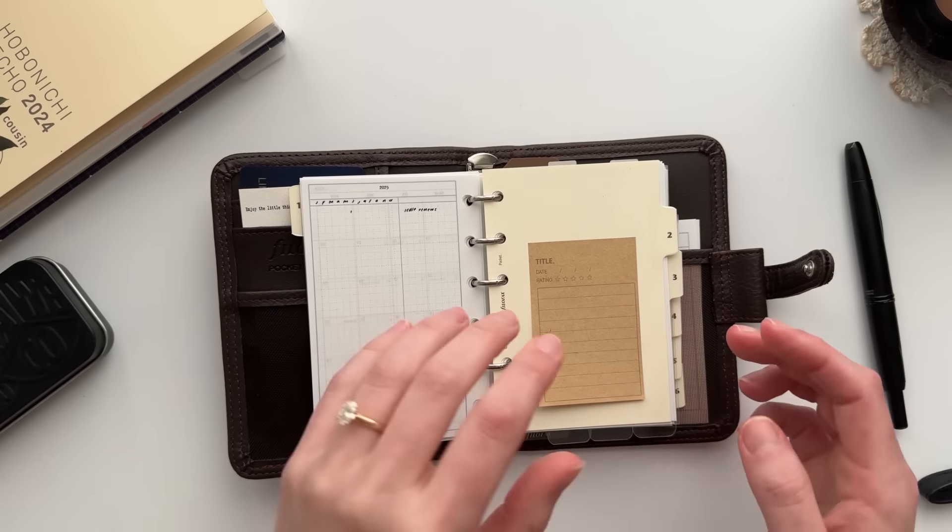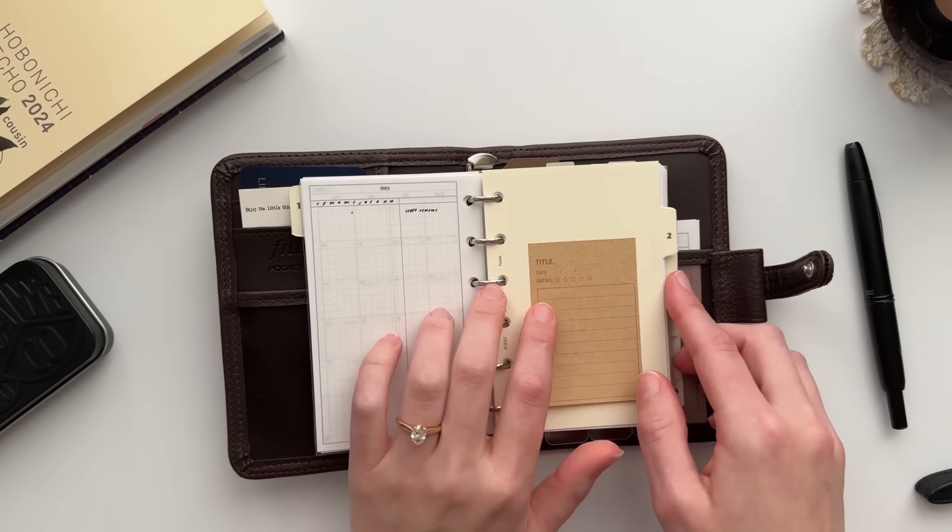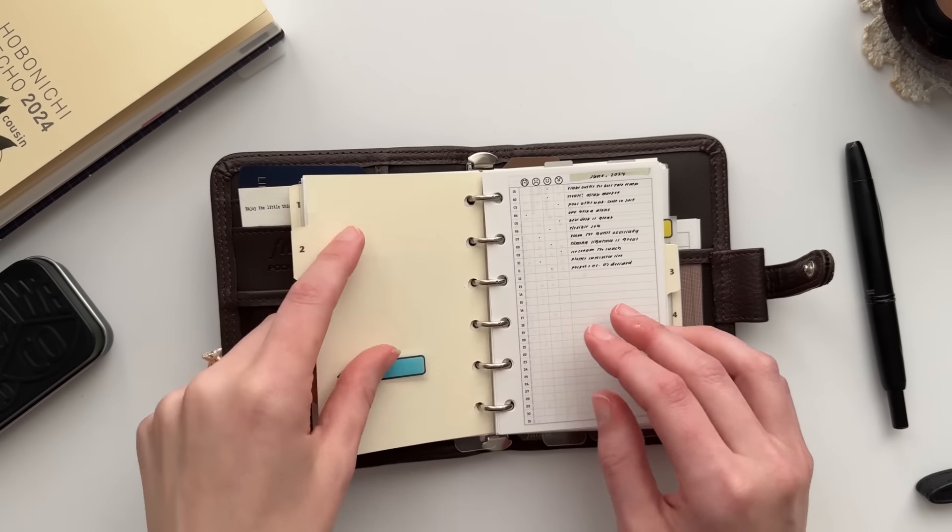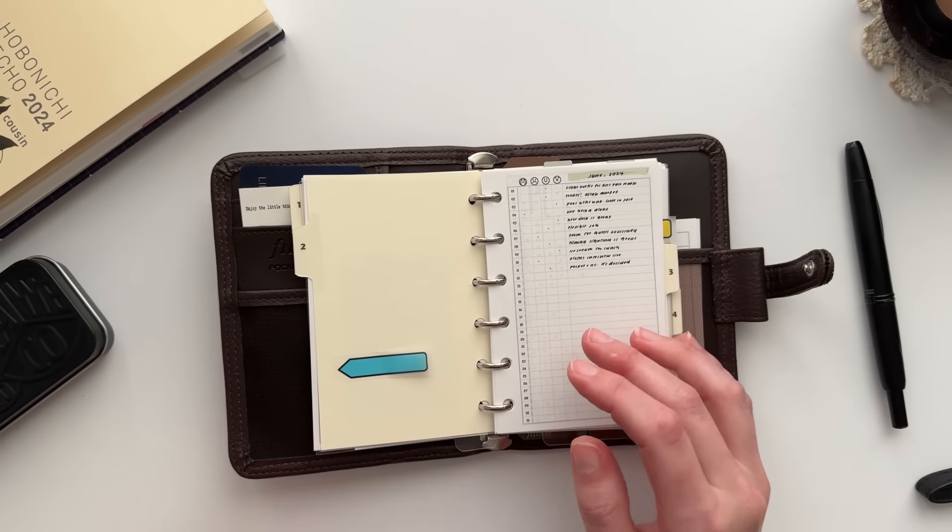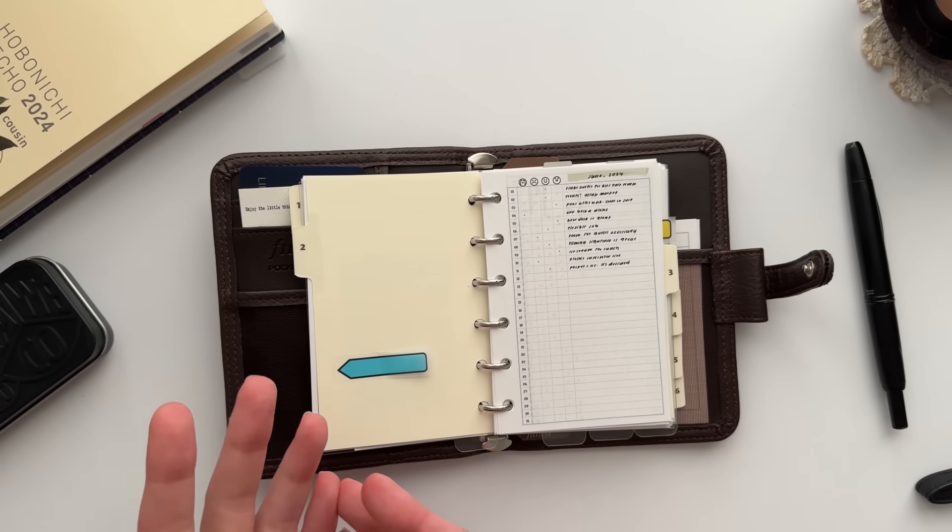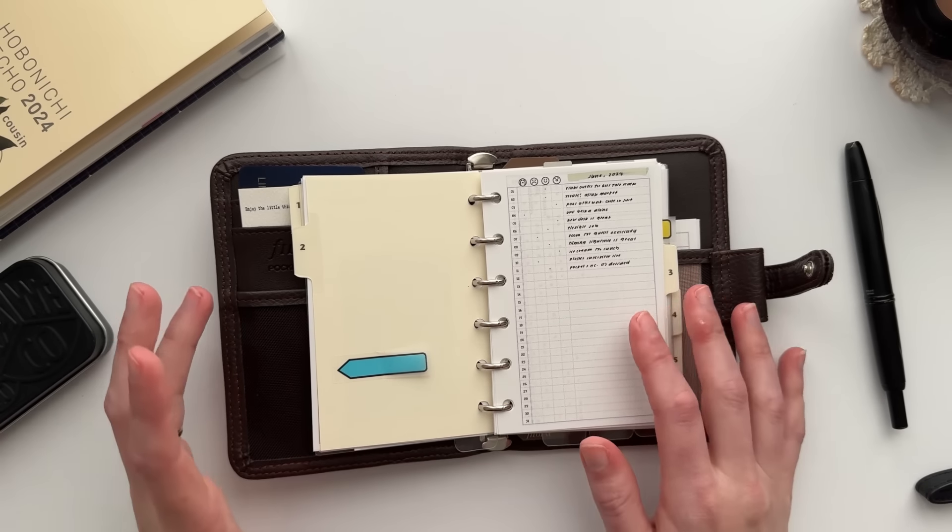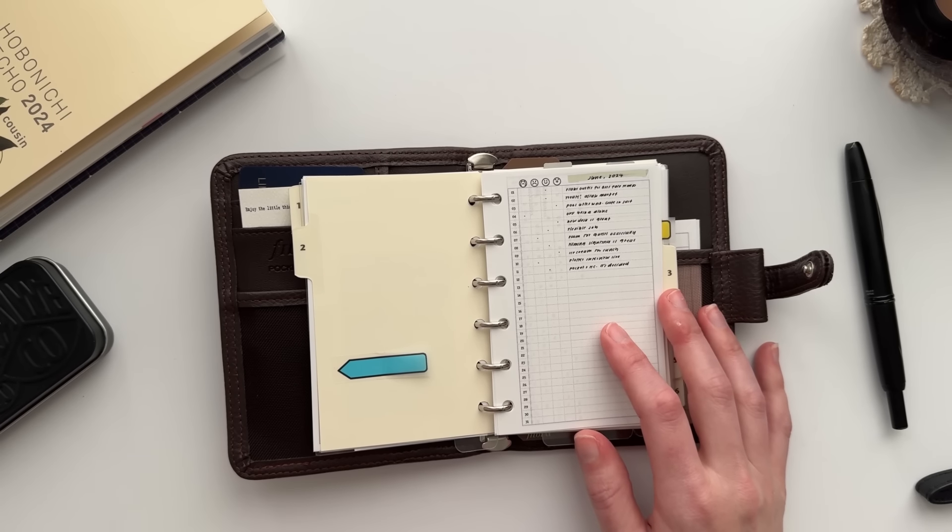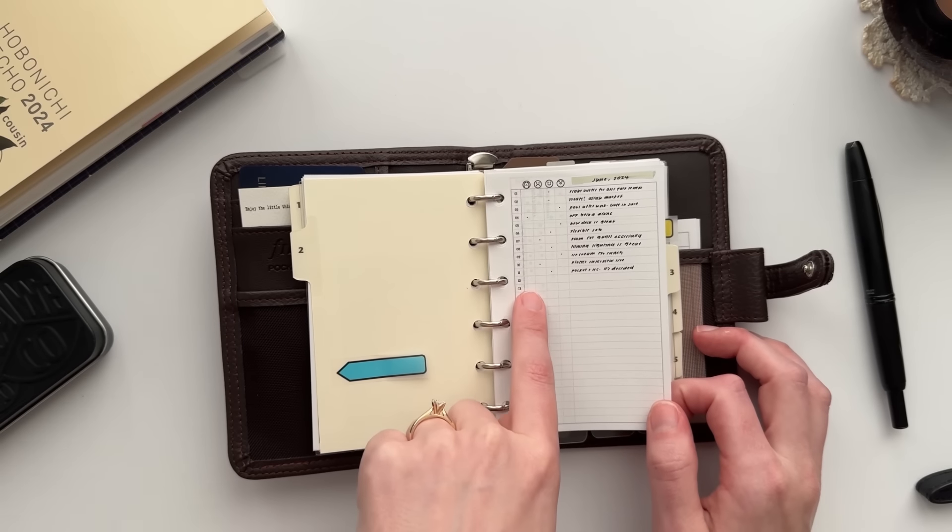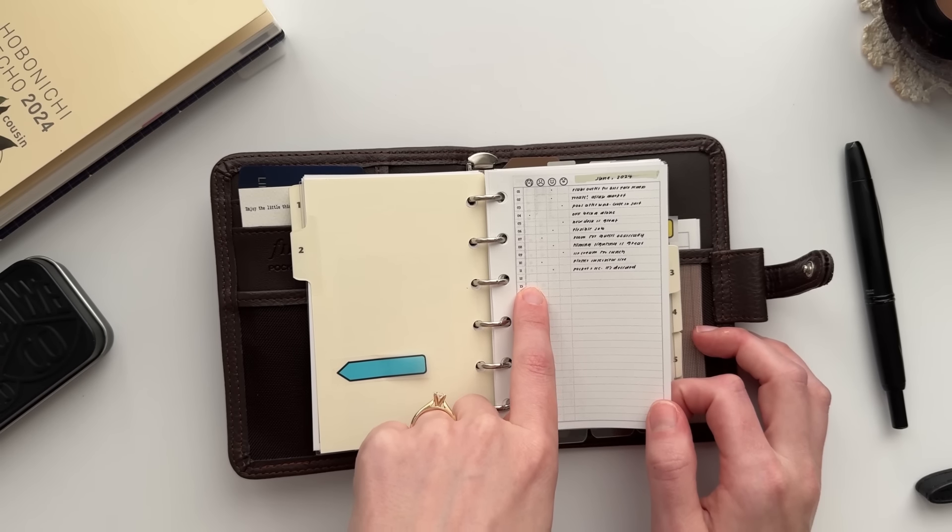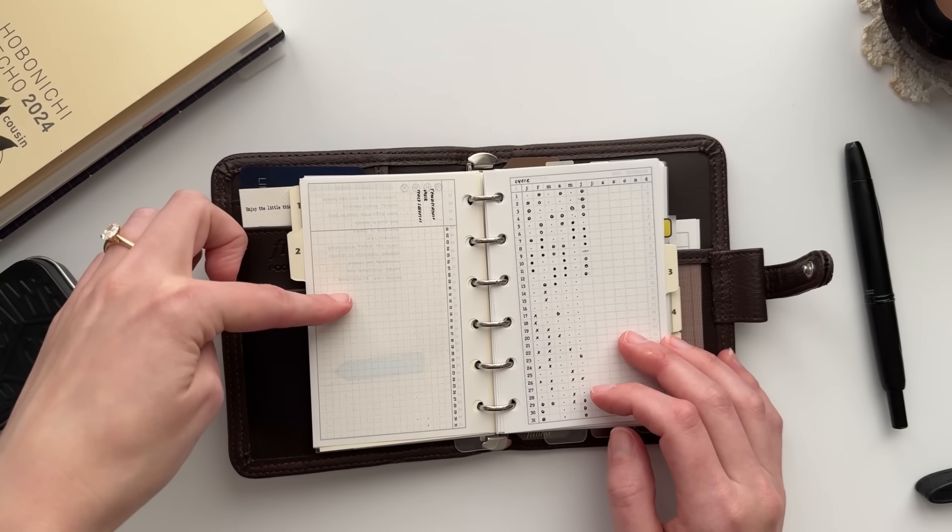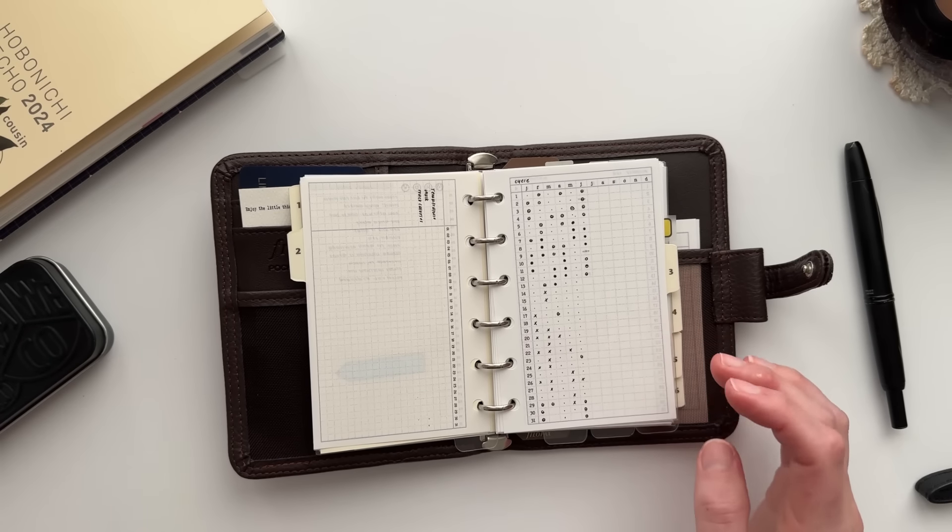Behind divider number two is habit trackers, lists, and collections. This is probably my favorite section between this and a daily to-do list. I need those two things, I probably need a monthly too, but this is my favorite part of my system by far. I have my mood log in the front - this is the compact mood log from the shop, so I just track my overall mood across the board at the end of each day and then one thing that I'm grateful for. I have a monthly habit tracker on the back which I've yet to fill out.